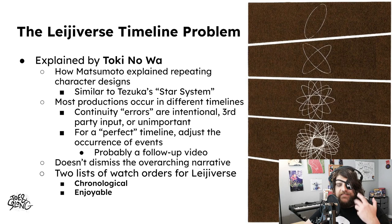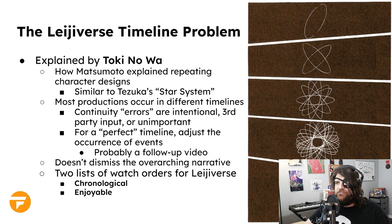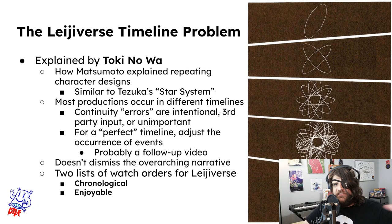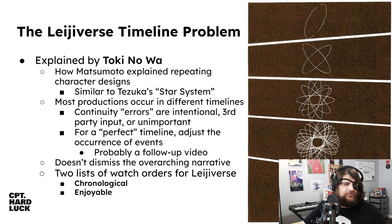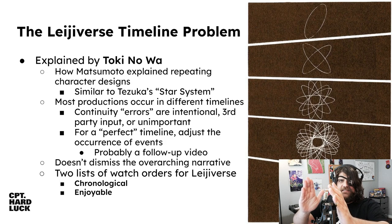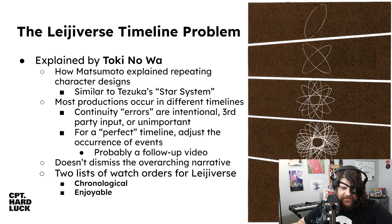It's not so much a problem as a literary device that Leiji Matsumoto used, called Toki no Wa. Toki no Wa is basically something Matsumoto used to explain repeating character designs — a problem that Osamu Tezuka also had to deal with. Tezuka solved it with the 'star system,' which is more about actors or actresses consistently recast, like how Quentin Tarantino always casts himself.